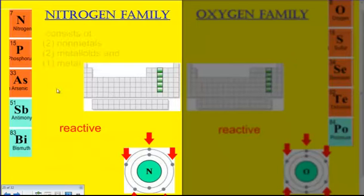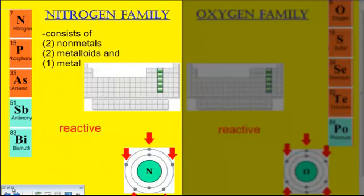These elements consist of two non-metals, two metalloids, and a metal. The non-metals are nitrogen and phosphorus. The two metalloids are arsenic and antimony, while the last metal is bismuth. The valence of this family will be five, so we're starting to see more reactivity.